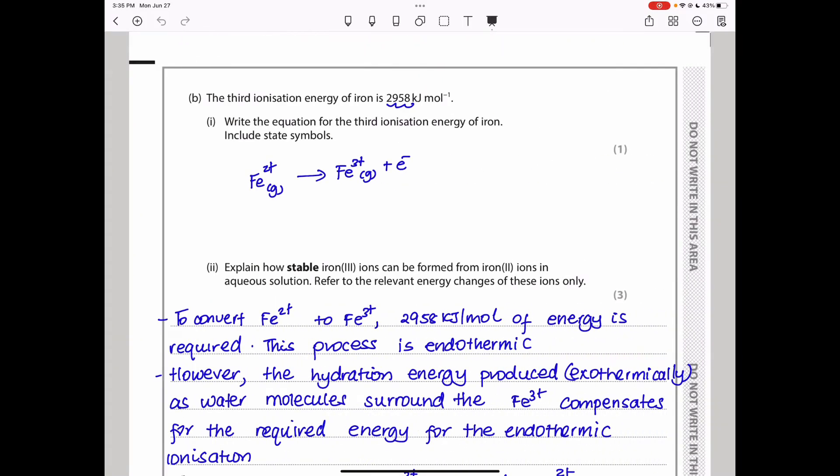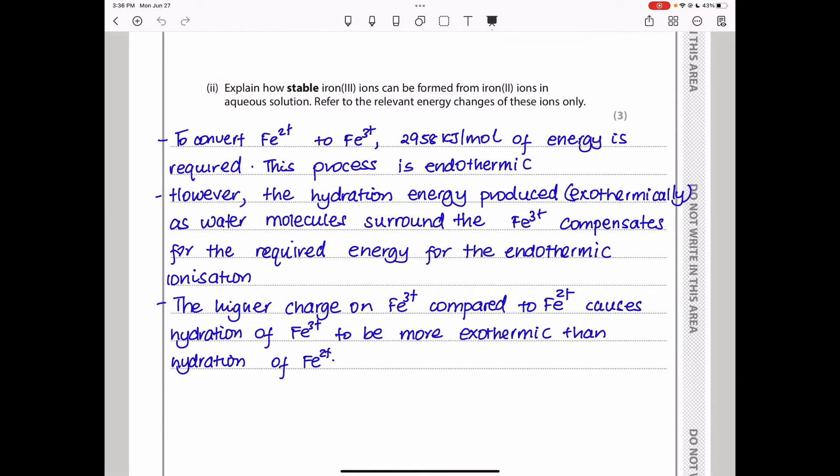Here we have the third ionization energy of iron is 2958 kJ per mole. They say: write the equation for the third ionization energy of iron, including state symbols. Since they are telling us third ionization, it means it should already be Fe2+. And since we are talking about ionization, it should be gas. So, Fe2+(g) gives us Fe3+(g) plus an electron. That is third ionization energy of iron.